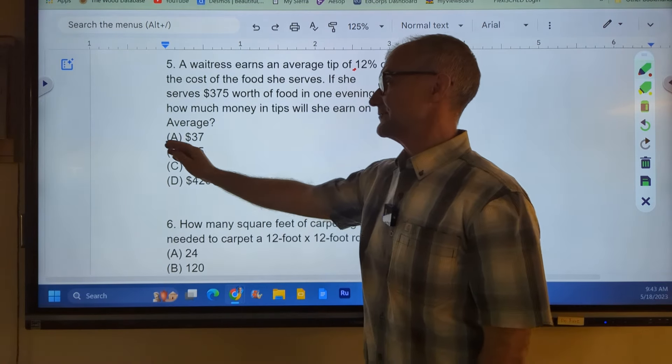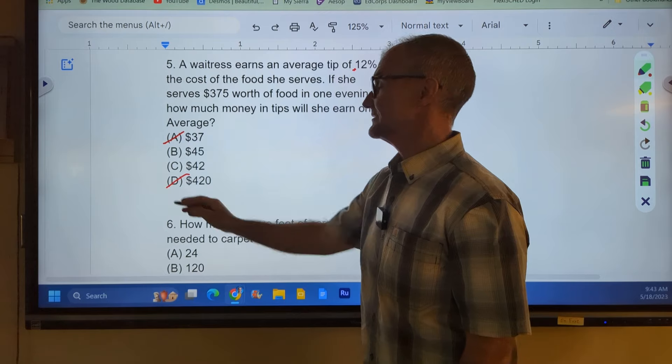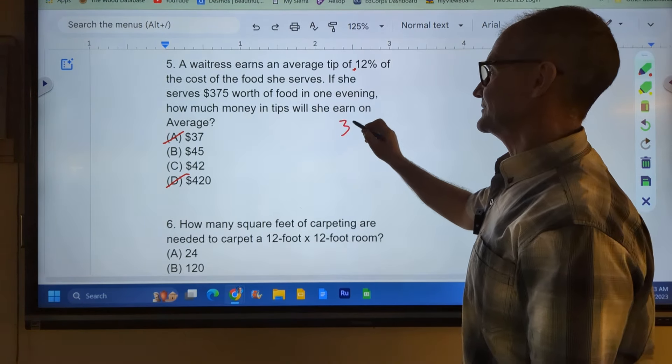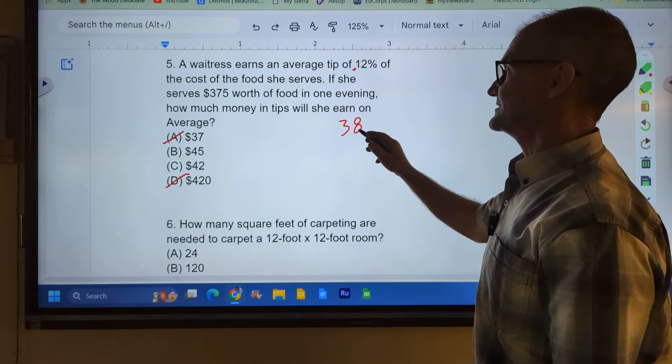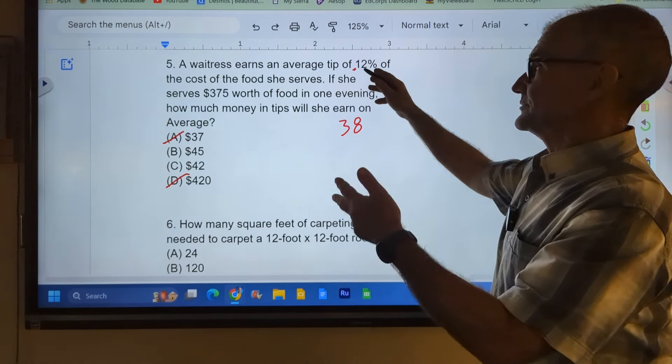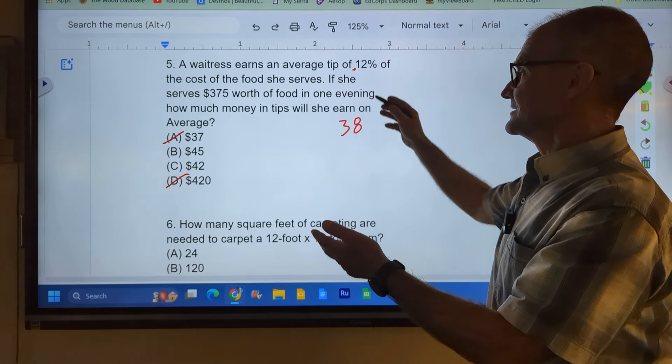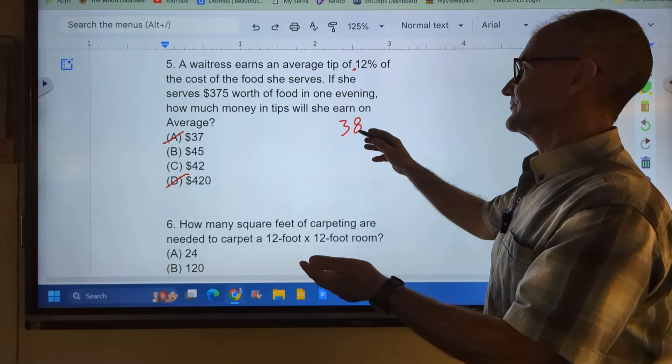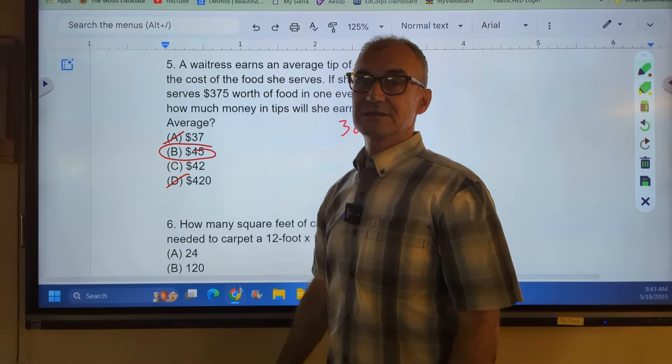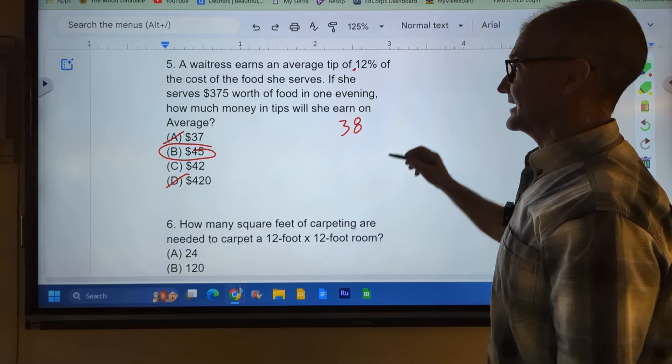So ten percent of that would be about thirty-eight. So it can't be that one. It can't be that one. And then thirty-eight, so I'm just going to round it to say thirty-eight bucks for ten percent. And then I'm going to add another one percent and one percent to get the twelve percent on there. So I'm going to add another four and four. It's going to be like forty-five bucks. So forty-five bucks is going to be it.